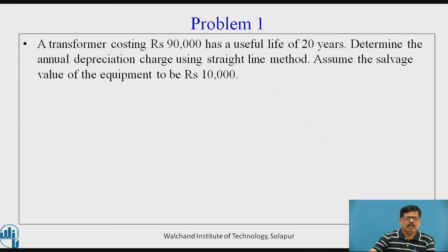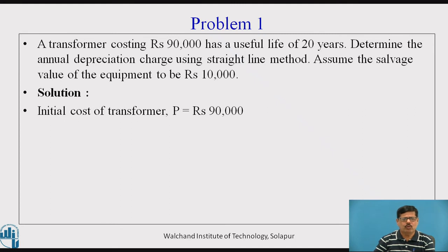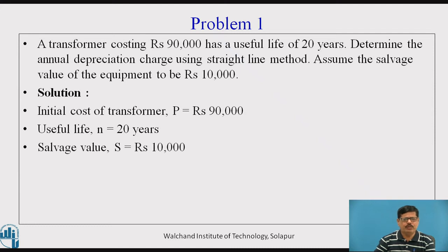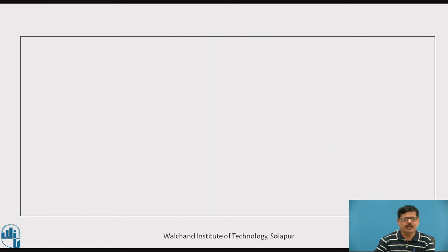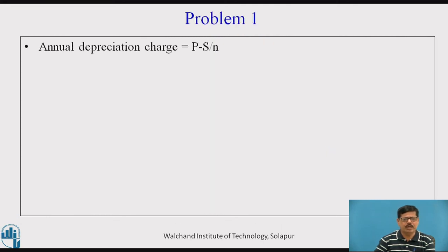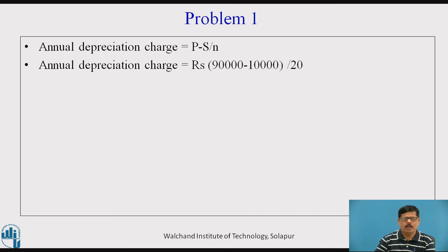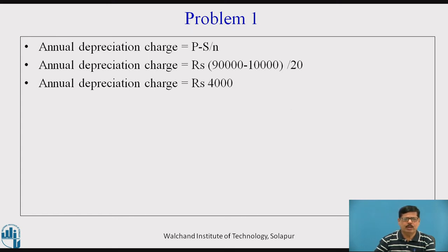Now let us solve Problem 1. A transformer costing 90,000 rupees has a useful life of 20 years. Determine the annual depreciation charge using the straight line method, assuming a salvage value of 10,000 rupees. Solution: initial cost P = 90,000, useful life = 20 years, salvage value S = 10,000. Using the straight line method, annual depreciation = (P − S) / n = (90,000 − 10,000) / 20 = 4,000 rupees.